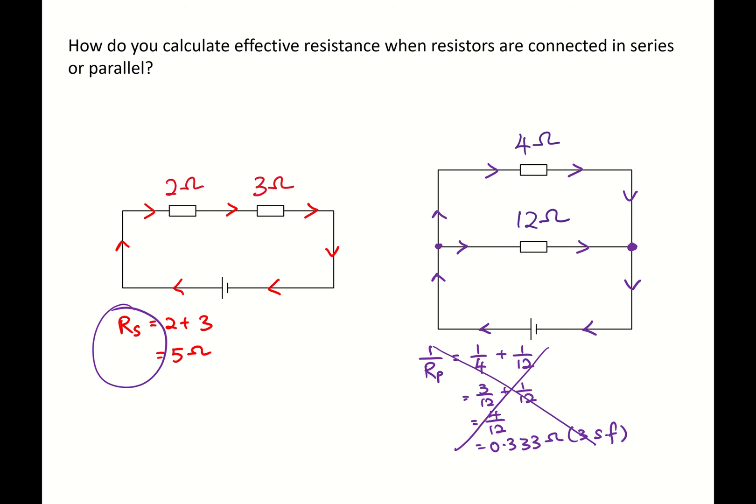I'm now going to show the proper working at the top. 1 over Rp equals 1 over 4 plus 1 over 12. Now note, 1 over Rp, your effective resistance is in the reciprocal, so I continue to write 1 over Rp equals 4 over 12.